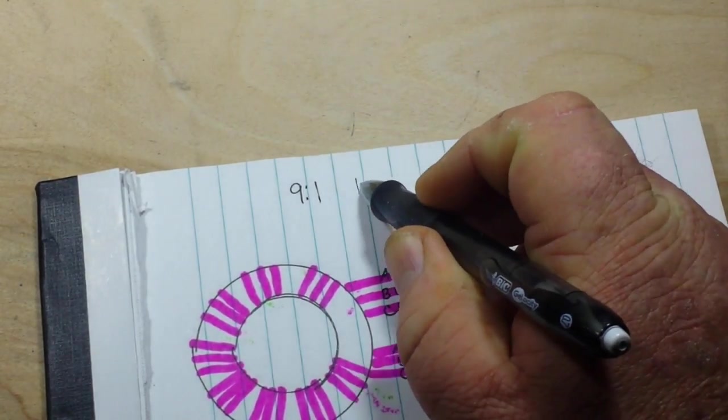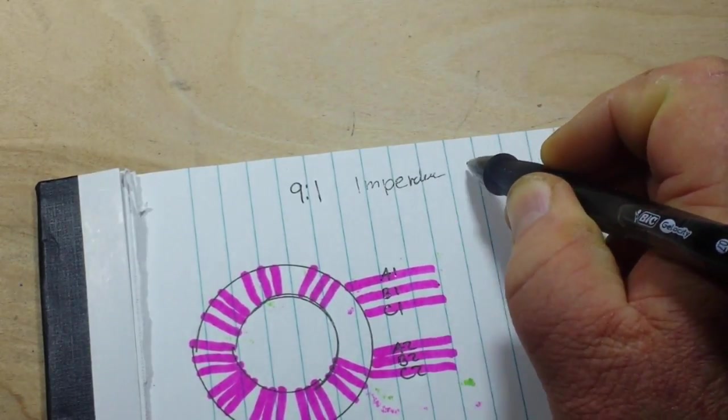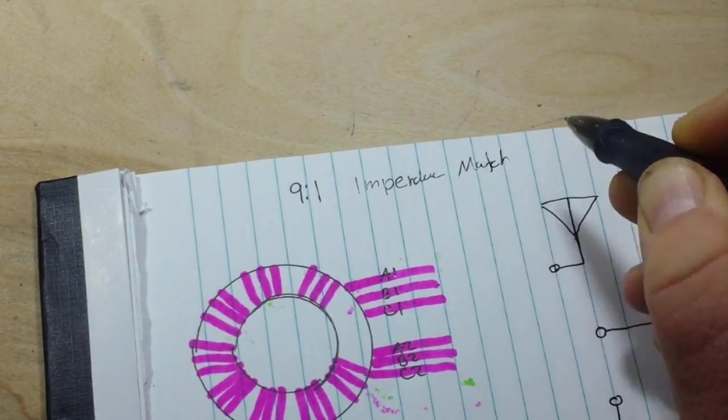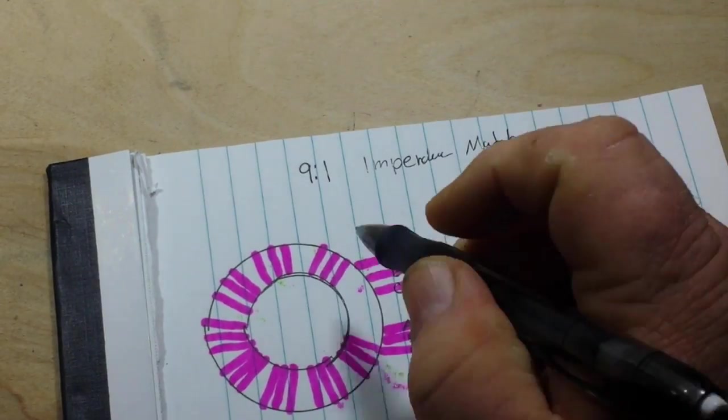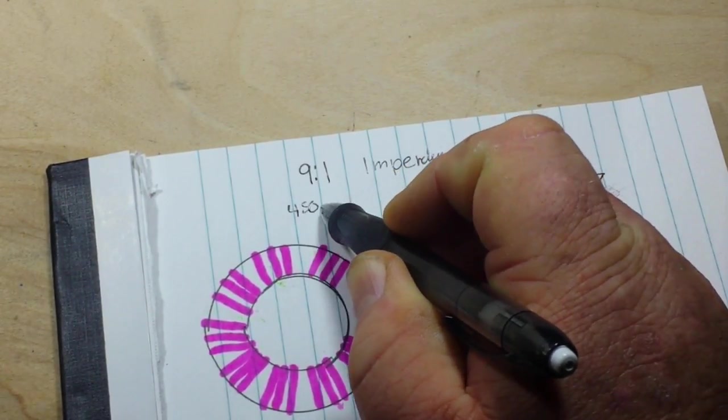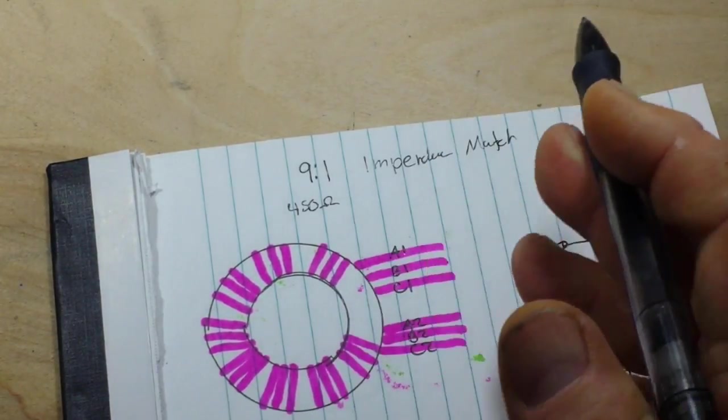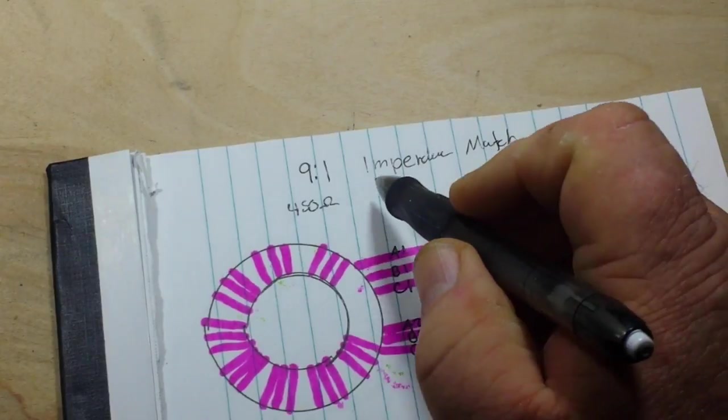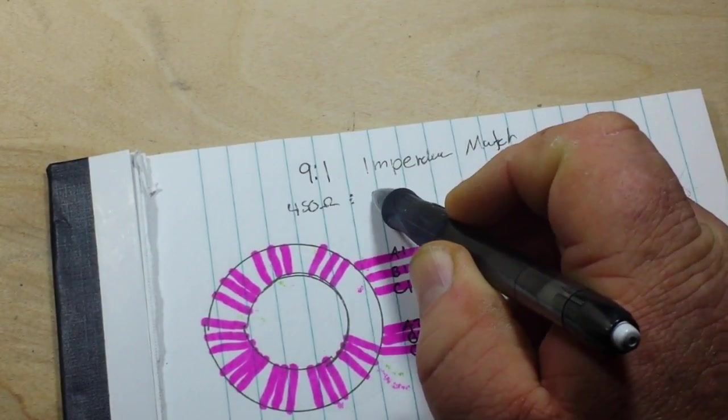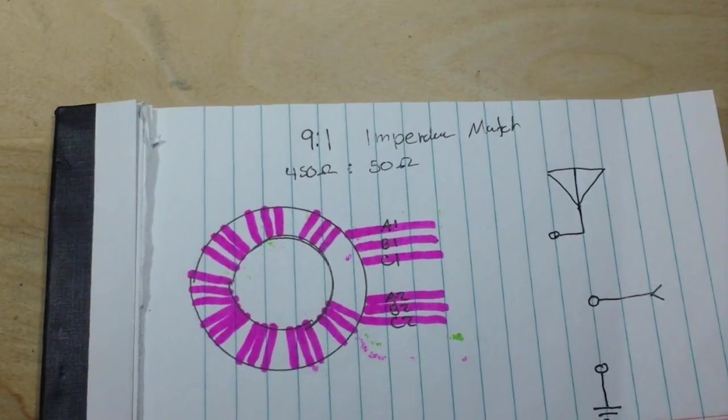This is a 9:1 impedance match. What this is going to do is match a 450 ohm line, whether it's an antenna or whatever you're using it for, to a 50 ohm load.